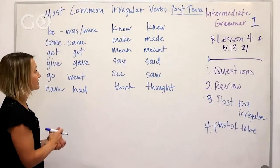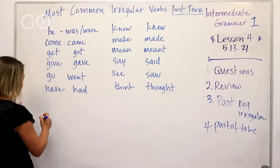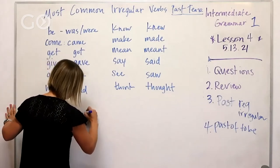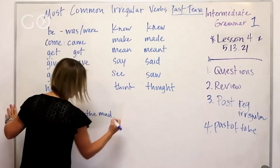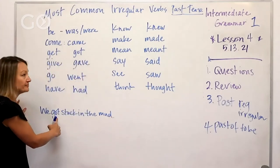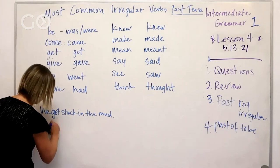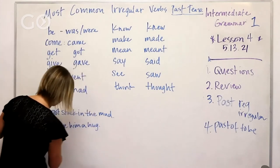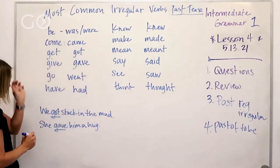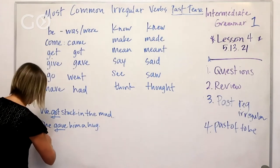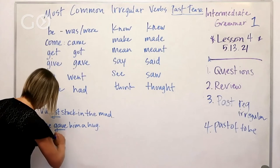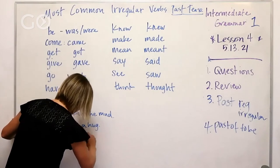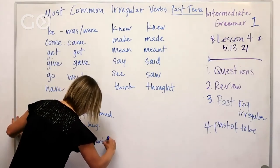Let's do a couple of examples. We got stuck in the mud — 'got stuck.' She gave him a hug — 'gave,' 'got,' those are the past tense there. Everyone went to the party — 'everyone went.' There's that past tense.